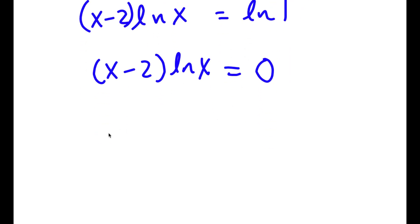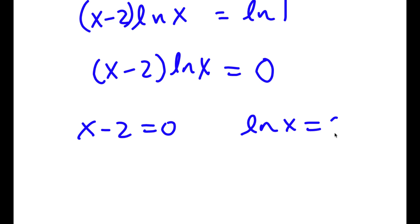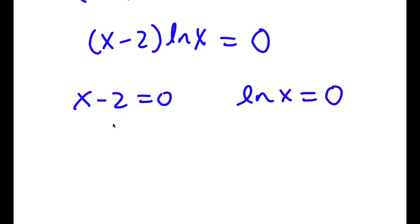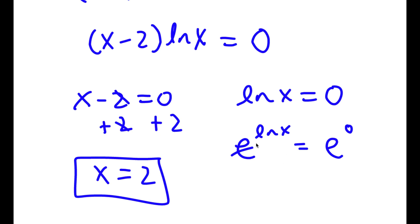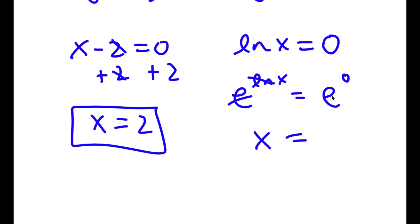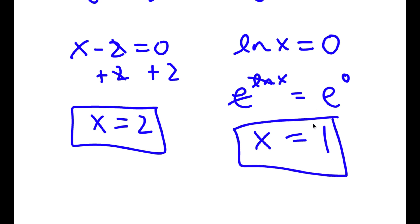This gives me two equations: x minus 2 equals 0, and ln x equals 0. For x minus 2 equals 0, all I have to do is add 2 on both sides, giving me x equals 2. For ln x equals 0, I take e to the power of both sides, so e to the power of ln x equals e to the power of 0. The e and ln cancel, leaving x equals e to the power of 0, which is 1. So my two values of x are x equals 2 and x equals 1.